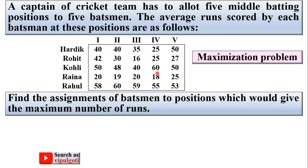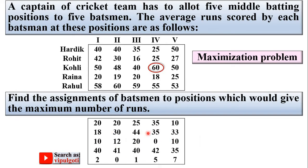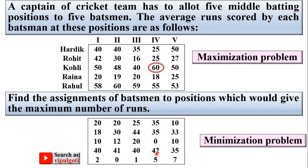The maximum value is 60. Now subtract all the values from this 60, and this will be your new matrix. This matrix is called the minimization problem matrix. So first pick up the maximum value and subtract all values from 60, and you can convert the maximization to minimization problem.